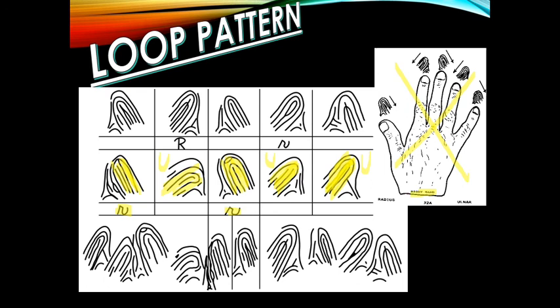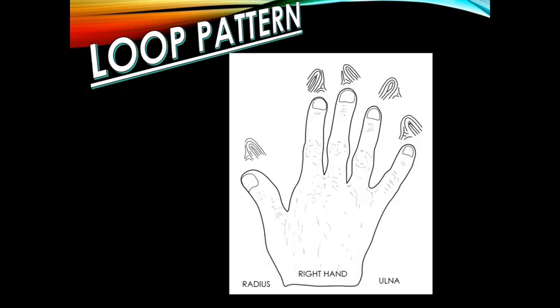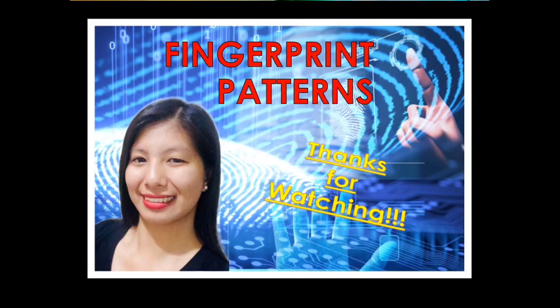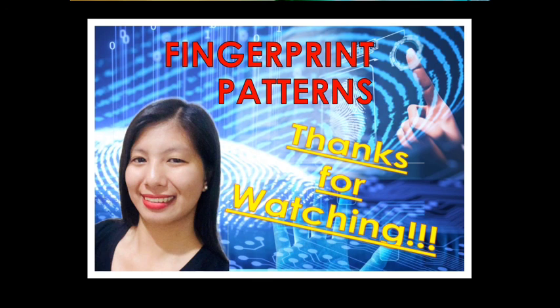I hope you are able to memorize the distinction between the ulnar loop and the radial loop. When a loop enters and exits from the thumb side of the hand, the pattern will always be a radial loop. When a loop enters and exits from the pinky finger side, the pattern will always be an ulnar loop. There are no exceptions to this rule. If we are going to use the left hand, the answers for this will be opposite. Thank you for watching our video lecture on fingerprint patterns.